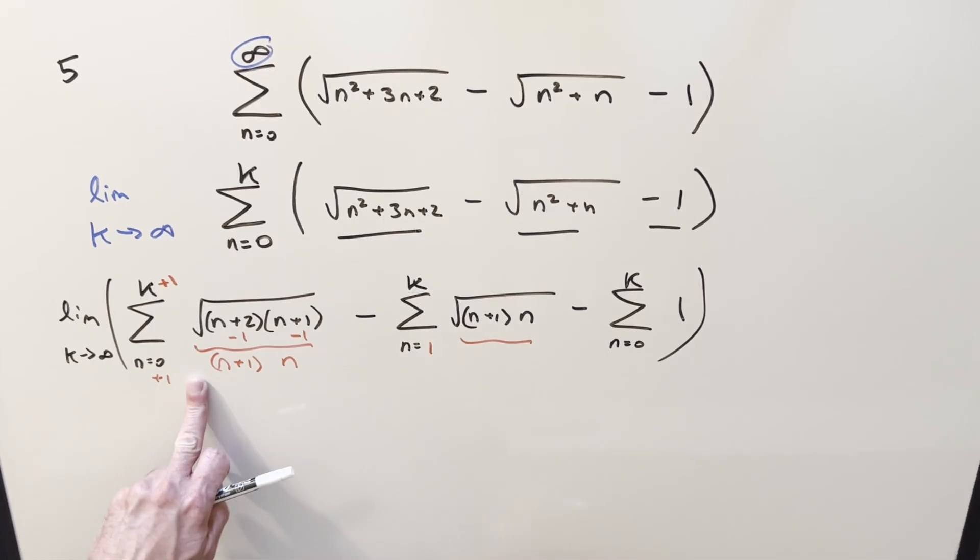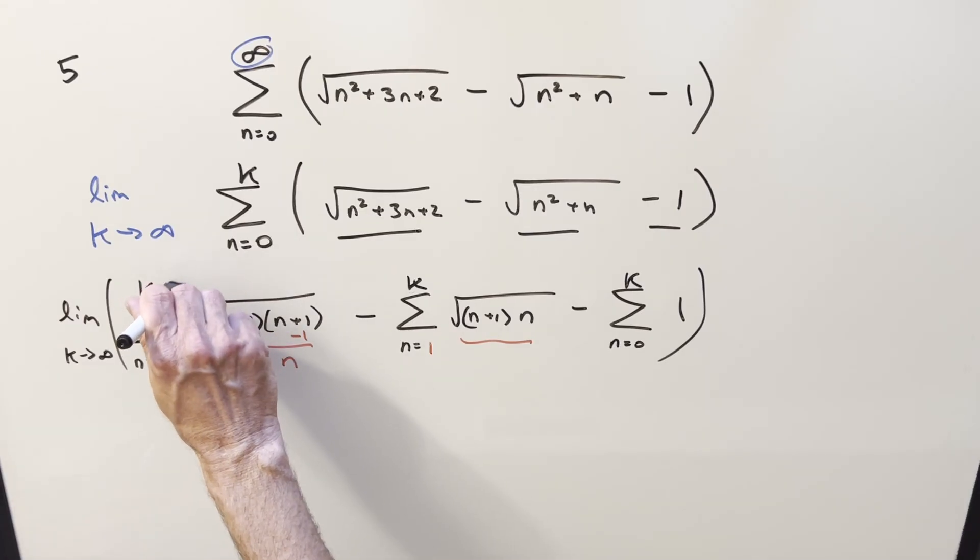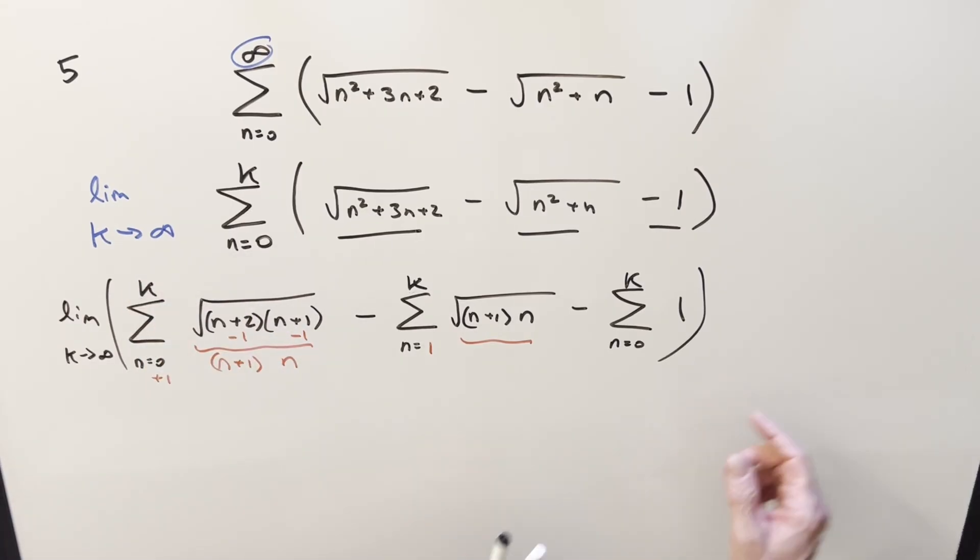So then in order to make this sum and this sum completely match, I need to break off this plus one term. That's the only difference now when we rewrite it. The inside's identical, the lower bound's identical. So I need to break off this k plus one term. To do that, all I need to do is add another term on the end and just evaluate at k plus one.